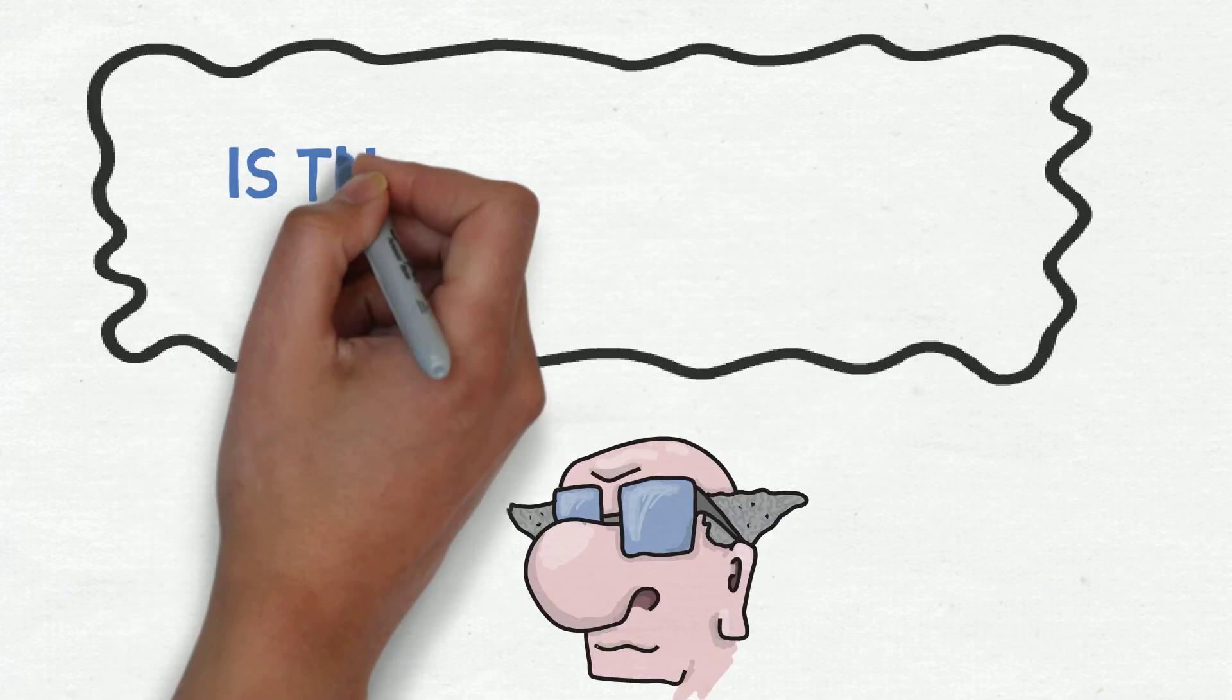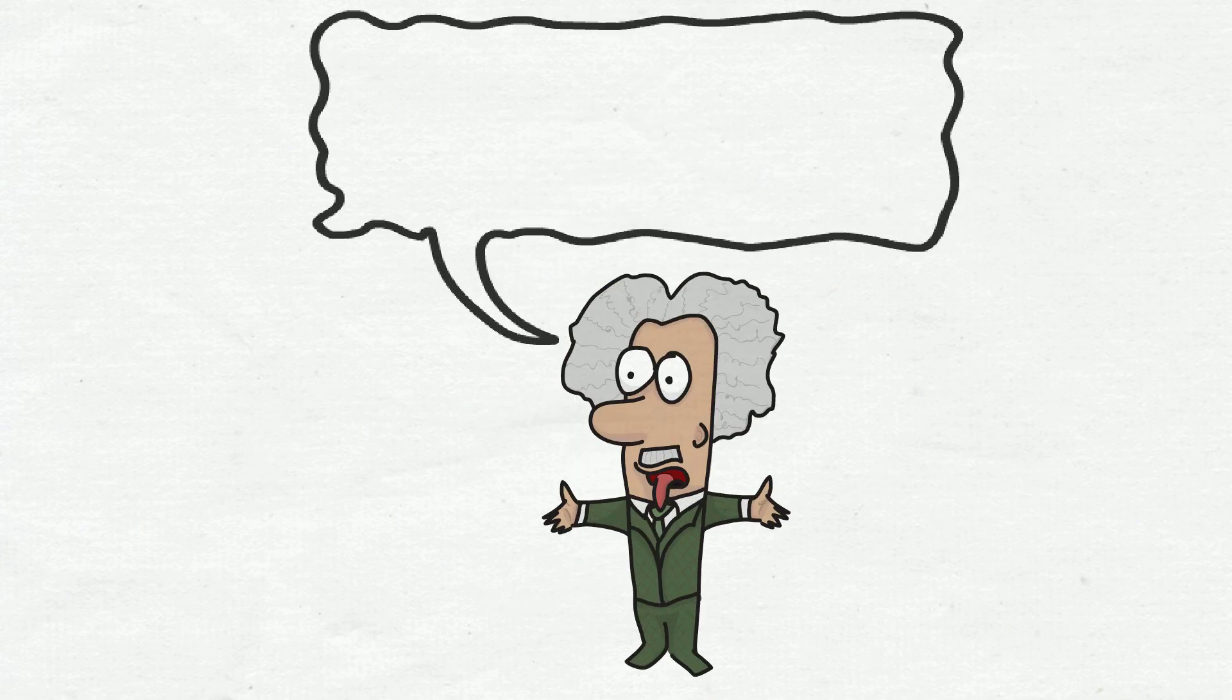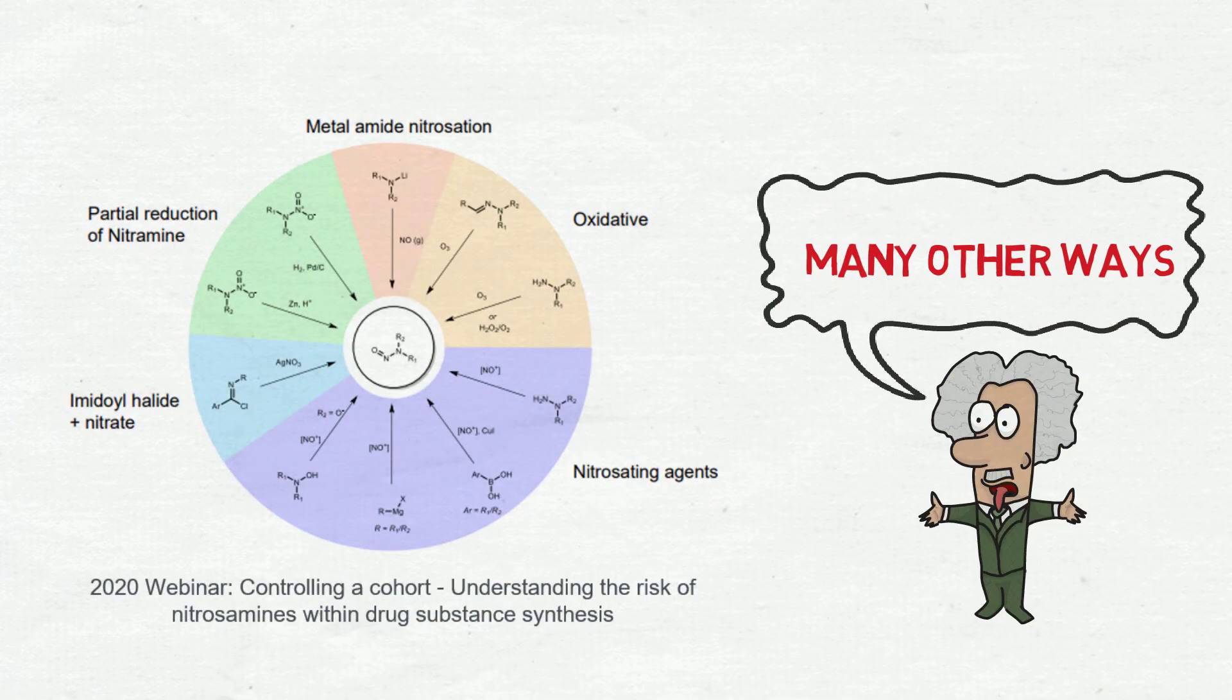But is there any other way to form nitrosamines? Actually, there are many other ways to form nitrosamines. Besides the use of nitrosating agents, nitrosamines are also formed by oxidative processes, metalamide nitrosation, partial reduction of nitramine, and also amidoyl halide nitration, and many other examples in the literature. That is just a simple overview of the possibilities.